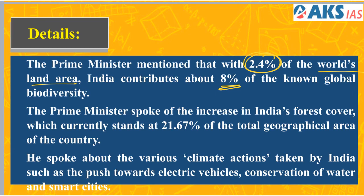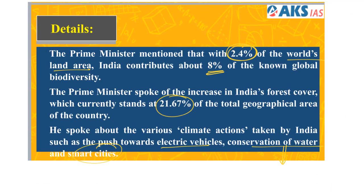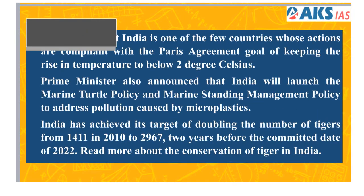India is one of the few countries where, along with economic development, we are not compromising on the environment. India's forest cover is currently 21.67% and it is increasing annually. India is achieving this through many climate actions such as pushing electric vehicles, conservation of water through the Jal Shakti program, and promoting smart cities. The FAME program is giving a push to electric vehicles. All this shows that India's actions are in compliance with the Paris Agreement goal of keeping temperature rise below 2 degrees Celsius.